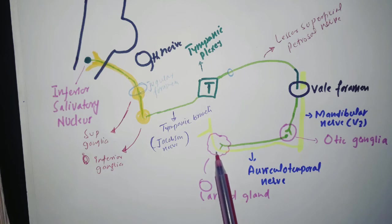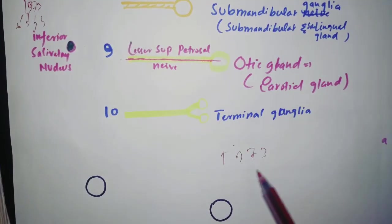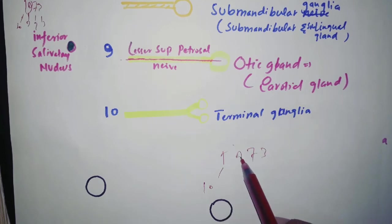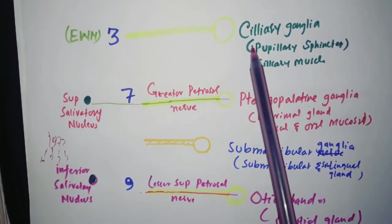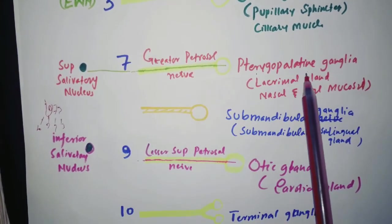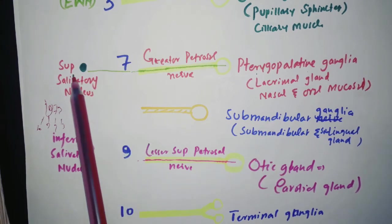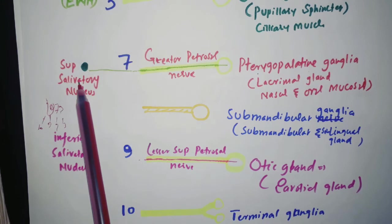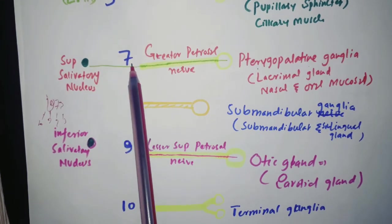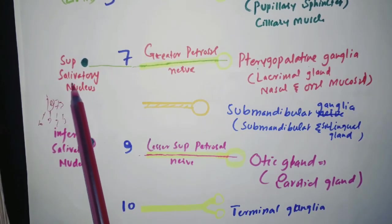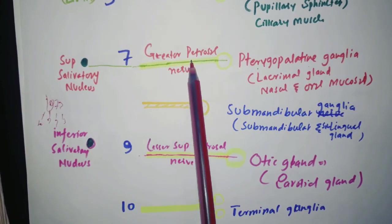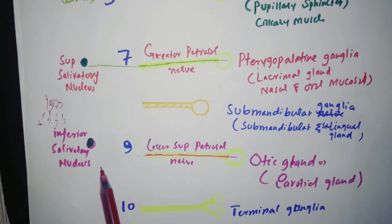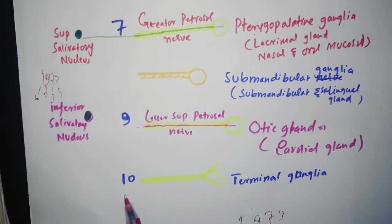For parasympathetic supply: cranial nerve three gives the ciliary ganglia; cranial nerve seven gives the pterygopalatine ganglia and also the submandibular ganglia; cranial nerve nine gives the otic ganglia; and cranial nerve ten gives terminal ganglia. Seven is superior, so it has the superior salivatory nucleus; nine is inferior, so it has the inferior salivatory nucleus. Superior gives the greater superficial petrosal nerve; inferior gives the lesser superficial petrosal nerve, which goes to the otic ganglia and then the parotid gland.